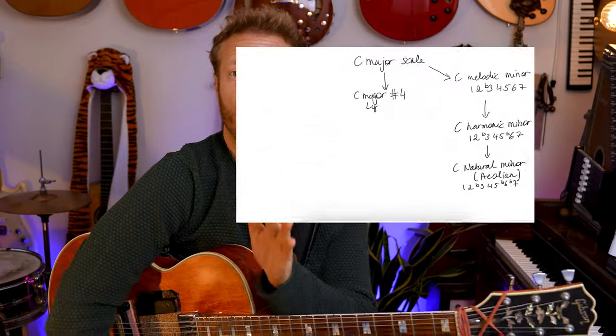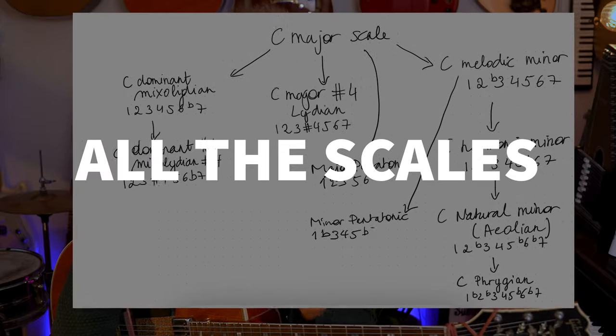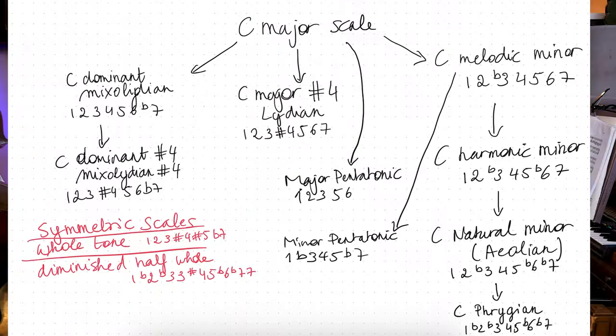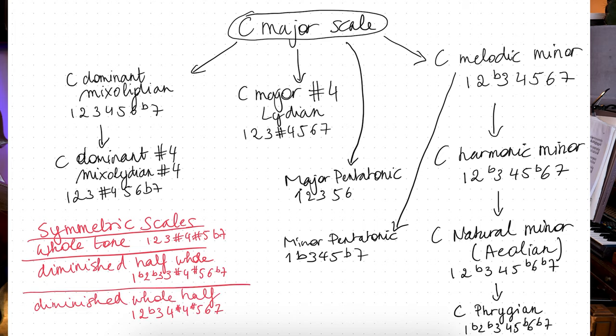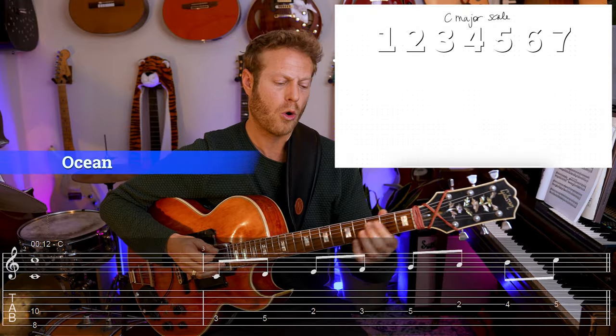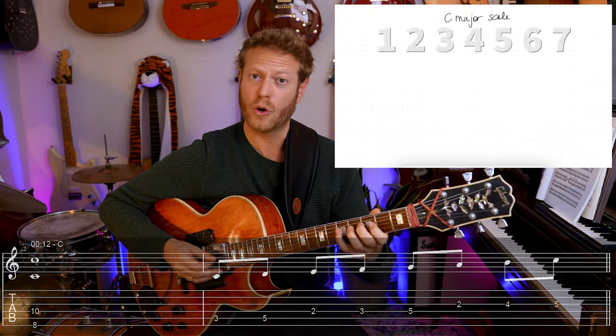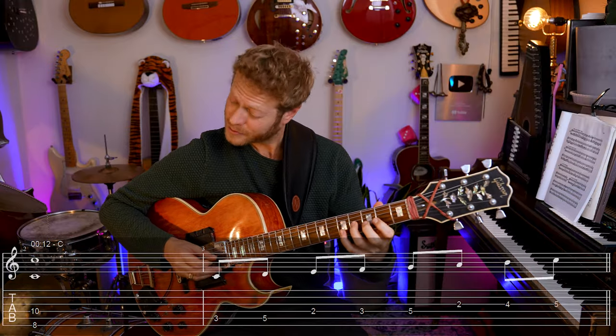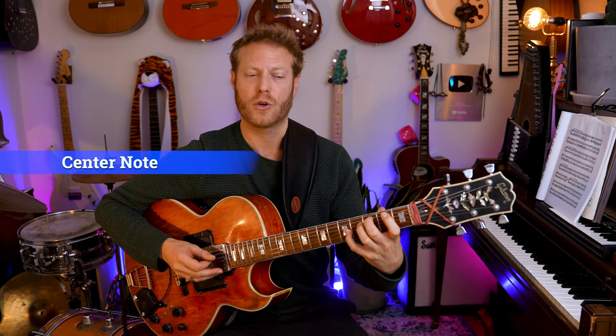Happy holidays! Today we're going to go over all the scales in 10 minutes. C is our ocean where all rivers flow to — that is the center note, the tonic, home base. We want to hear everything in that respect. This is the sound of C major scale, a sound you've heard many times.